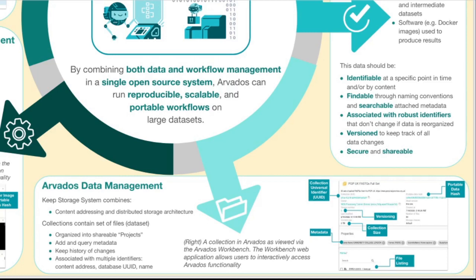The third identifier type is by human-assigned names, which are unique within a given parent project. Collections can be very large, on the scale of multiple terabytes. But regardless of size, you can still identify the entire dataset with a single identifier and keep a version history of every change.